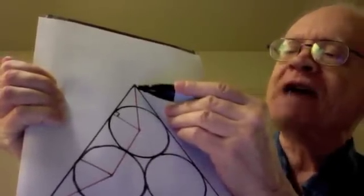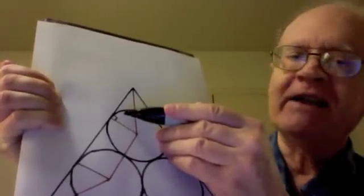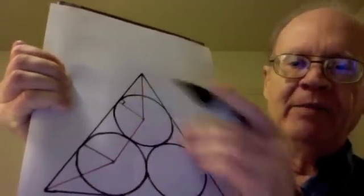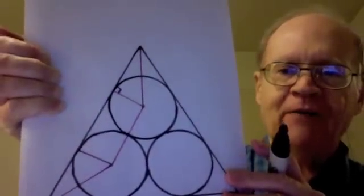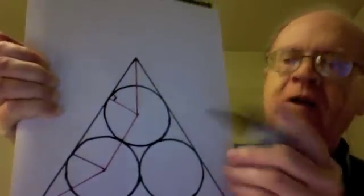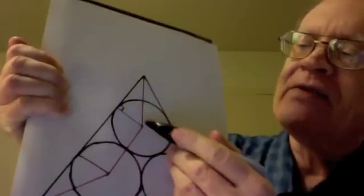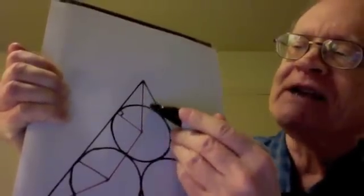Making this a 30-60-90 triangle. And by geometry, that is half of a little equilateral triangle, meaning that this length is half of this length.